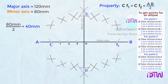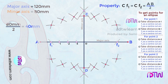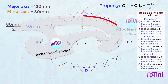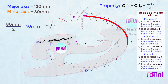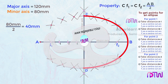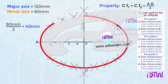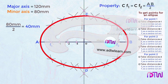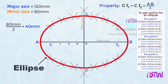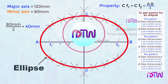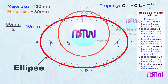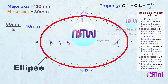To get the final ellipse, join these points using French curves. This is how we draw an ellipse using the arc of circle method. I hope this video helped you understand how to draw an ellipse using the arc of circle method. If you like this video, click on the like button, and if you are new to my channel ADTWLearn, click on the subscribe button and turn on all notifications.